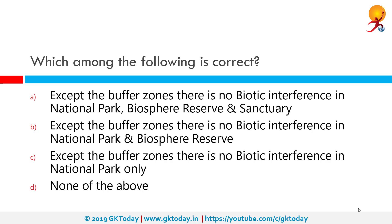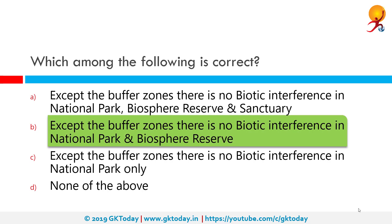Which among the following is correct? The only correct option is: except the buffer zones, there is no biotic interference in National Parks and Biosphere Reserves.